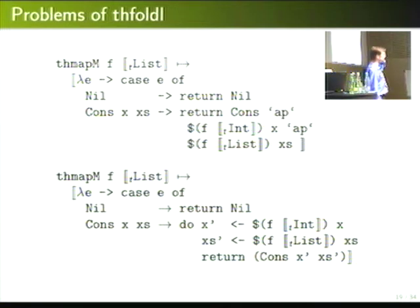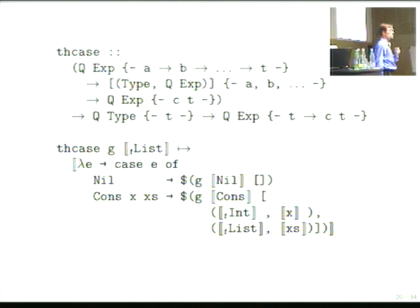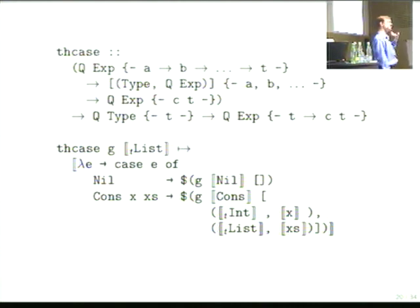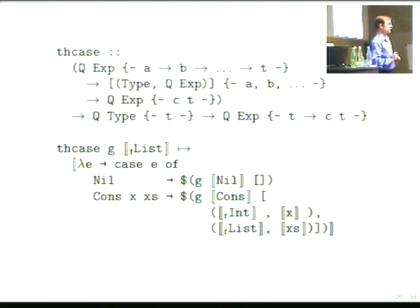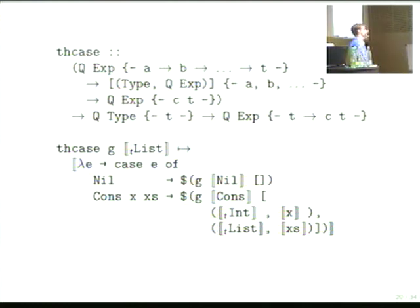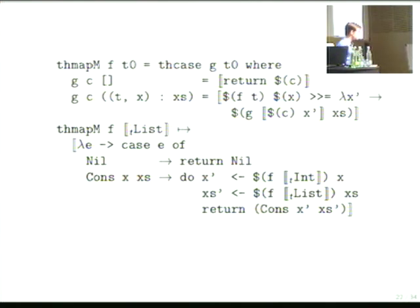Can we do better? We can if we change the interface. Instead of specifying it must be a fold — which Scrap Your Boilerplate is forced to do because of how the types work out — we specify it in terms of a g function that just says: here's the constructor, here's the list of arguments, you do whatever recursion or fold style you want. Using this, we can implement thmapq correctly with cons instead of appends, and thmapm with only two bindings and one return.